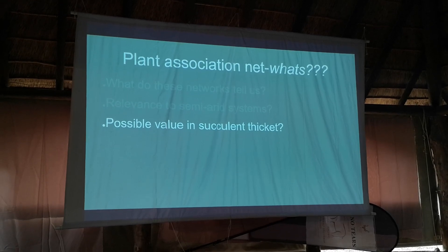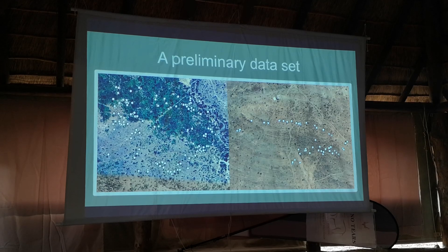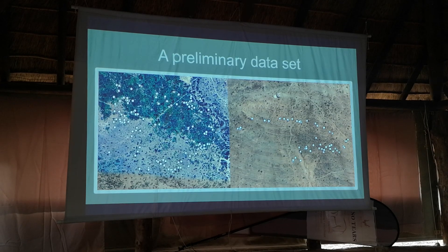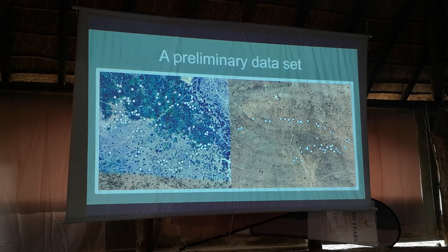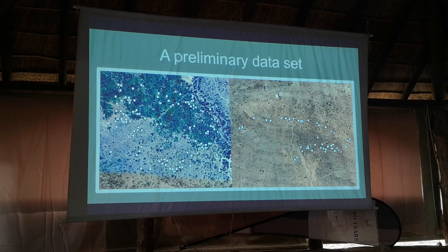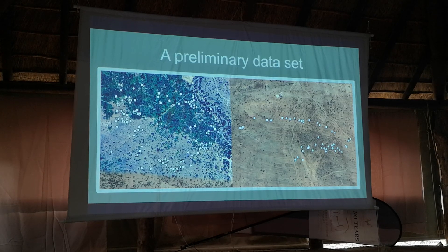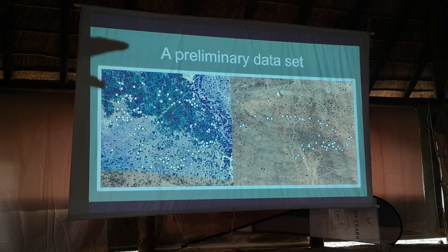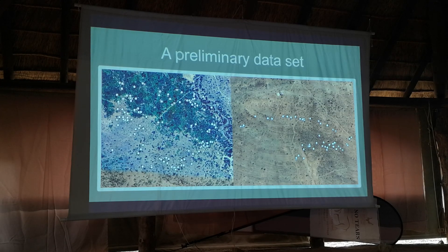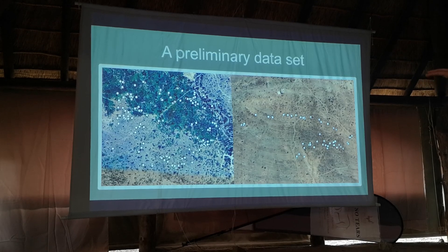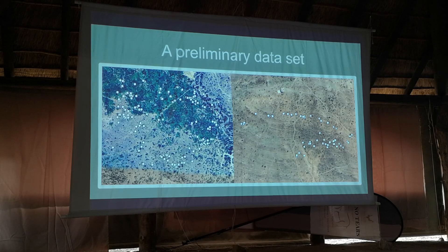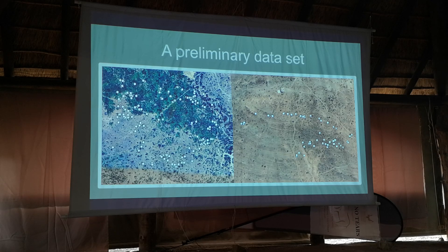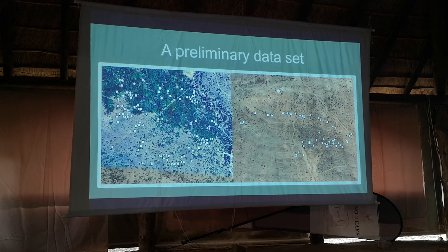This is the preliminary dataset - all those points are photographs where I basically walked around in the intact thicket, tried to do as many plots as possible, and then used the number of plots I could do that day to determine how many I'd do in the moderately degraded thicket. It looks very bad from this image, but in the moderately degraded thicket there's still quite a strong speculum element and still relatively large bush clumps.